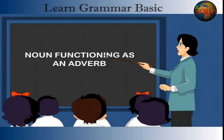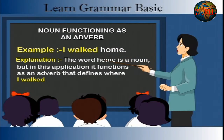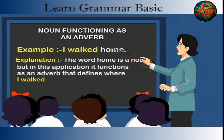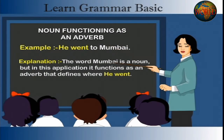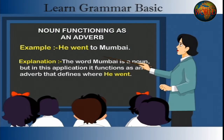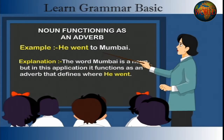Noun Functioning as an Adverb. Example: I walked home. Explanation: The word 'home' is a noun, but in this application it functions as an adverb that defines where I walked. Example: He went to Mumbai. Explanation: The word 'Mumbai' is a noun, but in this application it functions as an adverb that defines where he went.